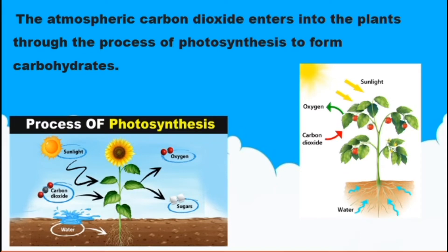The atmospheric carbon dioxide enters into plants during photosynthesis. With the help of sunlight and water, the carbon dioxide is converted — carbohydrates are produced, oxygen is released, and sugars are also formed. The atmospheric carbon dioxide enters into plants through the process of photosynthesis to form carbohydrates.